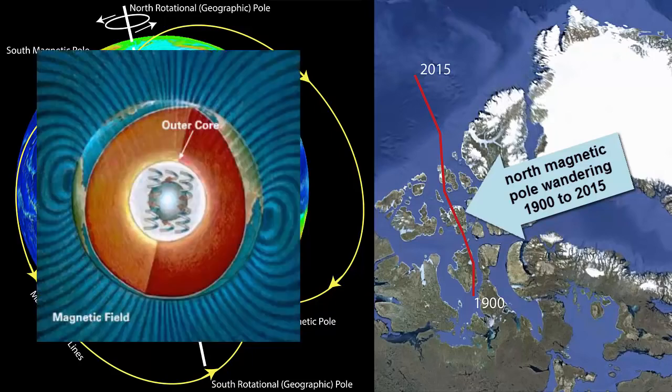The currents change. They speed up. They slow down. They change direction. If you sum up all the currents subtracting those going in the opposite direction, the net sum gives you the strength and direction of Earth's magnetic field.